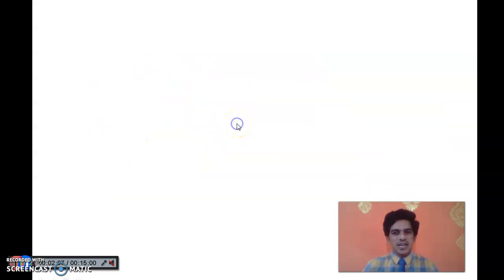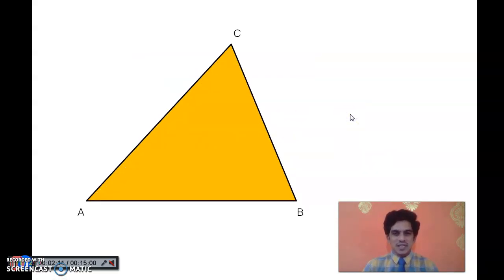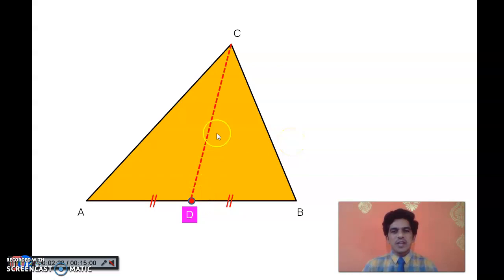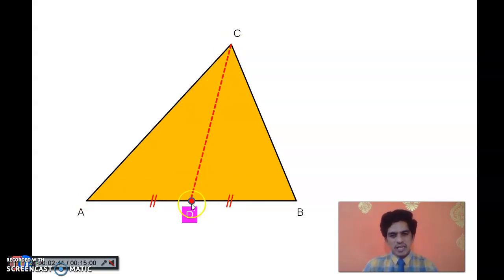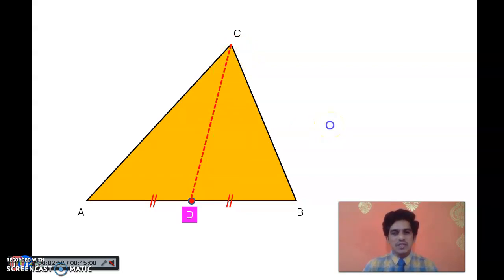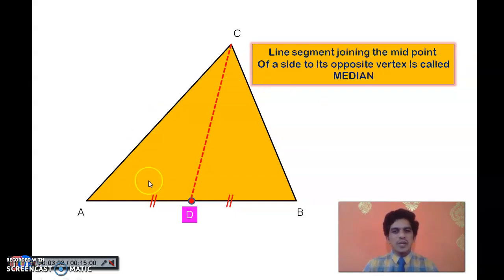Now we discuss point of concurrence and concurrent lines in the case of a triangle. Here I have taken triangle ABC. D is the midpoint of side AB, meaning the distance from A to D and from B to D are equal. I will join this midpoint D to the opposite vertex of side AB, which is C. So we have a line segment formed by joining the midpoint of one side to the opposite vertex — this line segment is called a median.